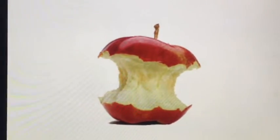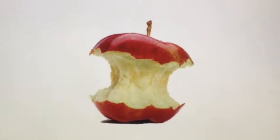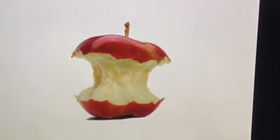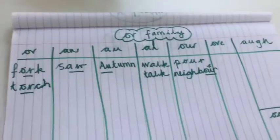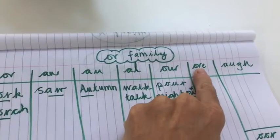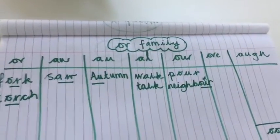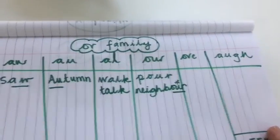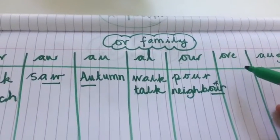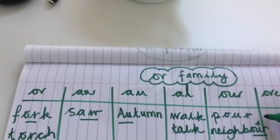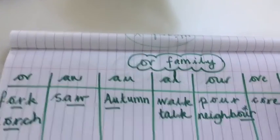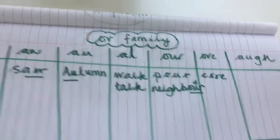Someone's eaten the apple but left the core — c-or-e, core. That 'or' sound is going to go in this column. Can you guess what letter goes at the front? That's right — it's a curly 'c,' c-or-e, core. Fantastic, great learning today!